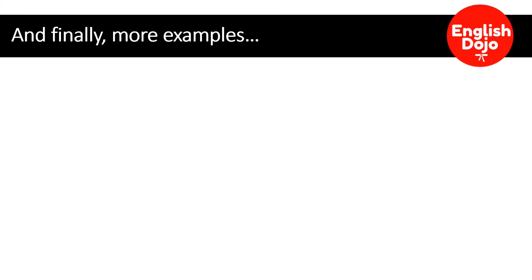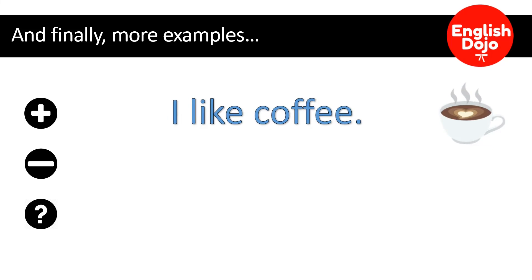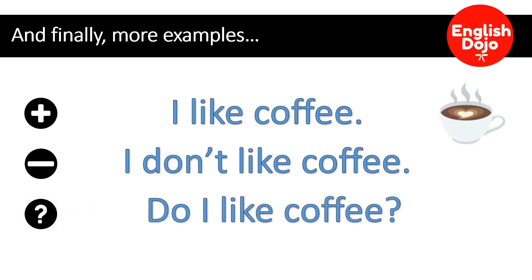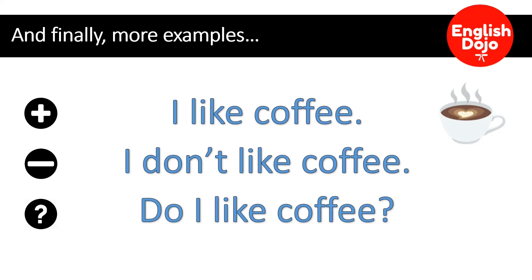Y antes de irnos, unos ejemplos. And finally, more examples. Te voy a poner este ejemplo. I like coffee. Me gusta el café. ¿Cómo lo cambiaría en negación? Recuerda, es persona, verbo y el complemento. I like coffee. El verbo es like. ¿Cómo sería negativo? I don't like coffee. No me gusta el café. Como estamos utilizando la persona I, el auxiliar es do. O también pudiste haber dicho I do not like coffee. Si fuese en pregunta, do I like coffee?